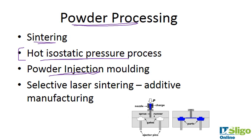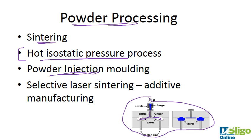Powder injection molding — I've covered this again in the metal section, and there's a depiction of it here. The ceramic powder is fed into a nozzle, runs into two molds, the system is pressurized and sintered, and then the parts are ejected. I've covered it in more detail in the metal section, so do go back to that.